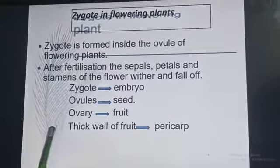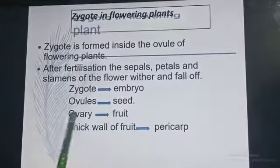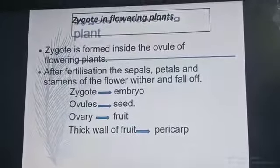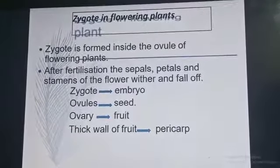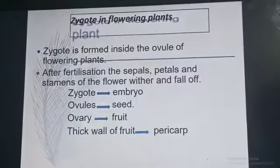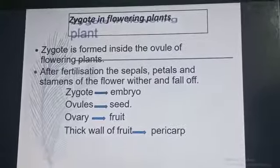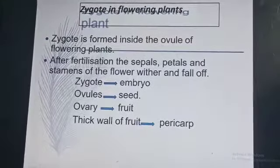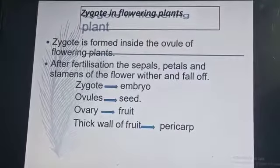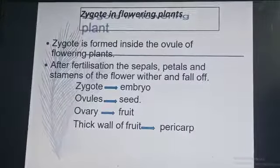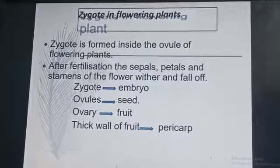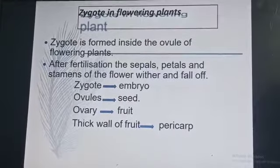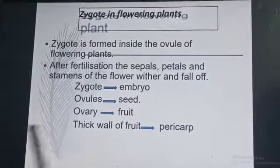The thick wall of the fruit is called the pericarp. In Class 11, we studied the three layers of fruits: Epicarp, Mesocarp, and Endocarp, based on their function of protection.